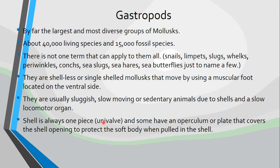The shell is often one piece, or as we can sometimes call it, a univalve — uni for one, valve meaning half — so it just has the one shell. And some have an operculum, or a plate, that covers the shell opening. So if you have ever seen a conch in the ocean, they kind of resemble really huge snails. But they have a plate that covers the opening, so when they feel threatened, they draw up inside the shell and that plate covers the opening, so that their soft body is not vulnerable to predators.